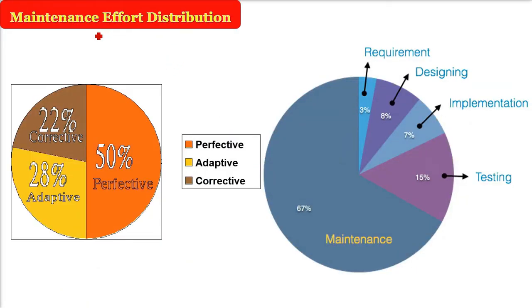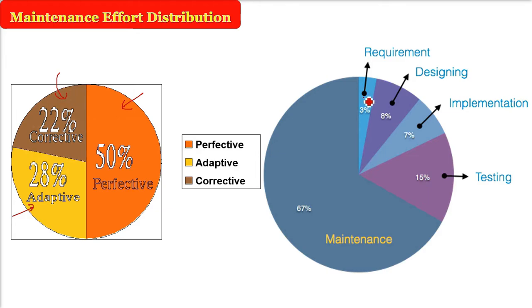The effort distribution with respect to maintenance: 50% of the maintenance effort is perfective, 28% is adaptive, and 22% is corrective maintenance. If you consider requirement, design, implementation, and testing as one part, almost 67% of the total effort is your maintenance part.